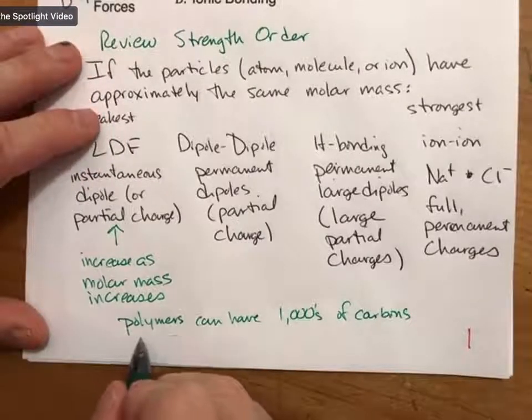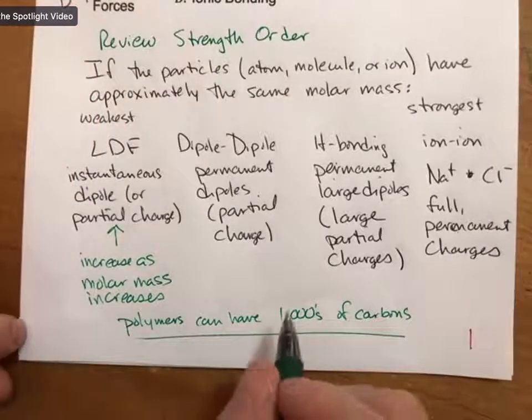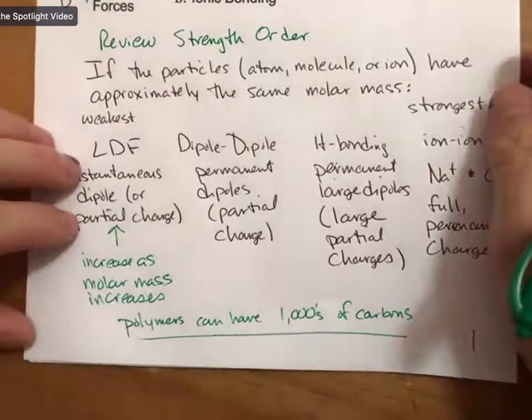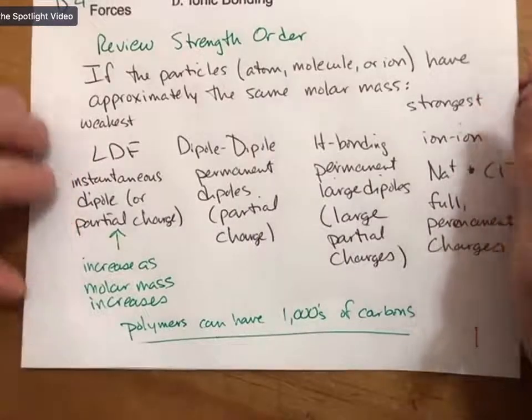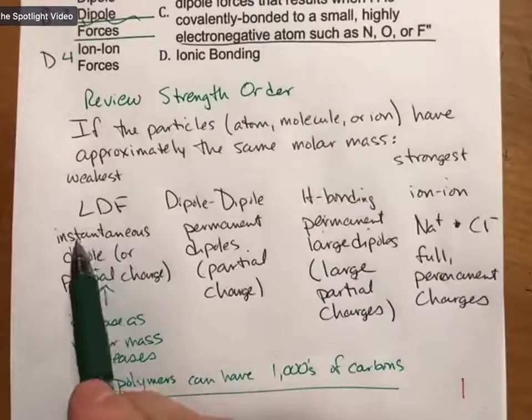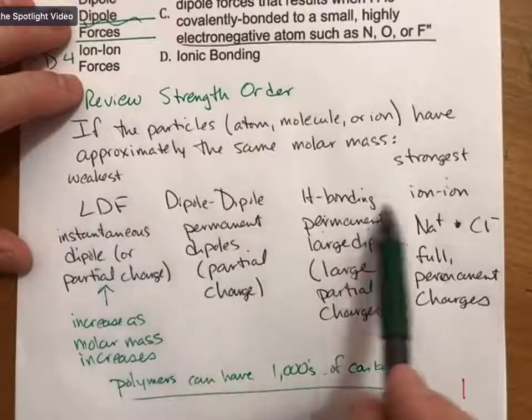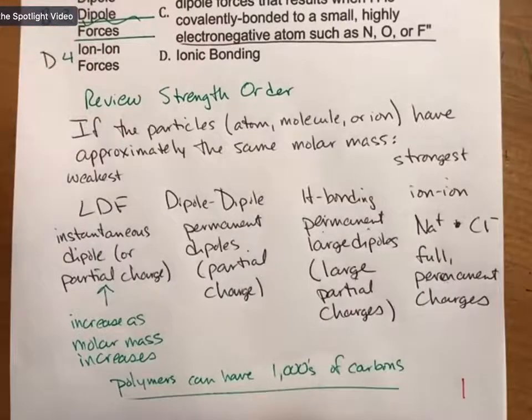And the big thing you need to think of when you do LDF and molar mass is when you talk about something called polymers. Polymers can have thousands of carbons. They can have very large molar masses. They're sort of a separate thing here. If you come to office hours, I'm happy to talk about polymers, but they're not part of the material we're going to cover for this class. But if you look over the questions, you'll see as much as possible I'll try and keep the molar mass the same as much as possible.